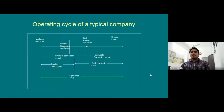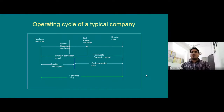The operating cycle of a typical company involves purchasing resources, paying for resources, selling products on credit, and collecting receivables as cash. This diagram shows the operating cycle including the collection period, payable deferral period, and cash conversion cycle.